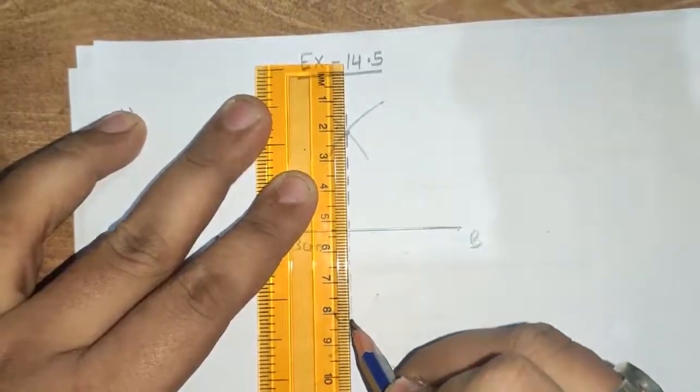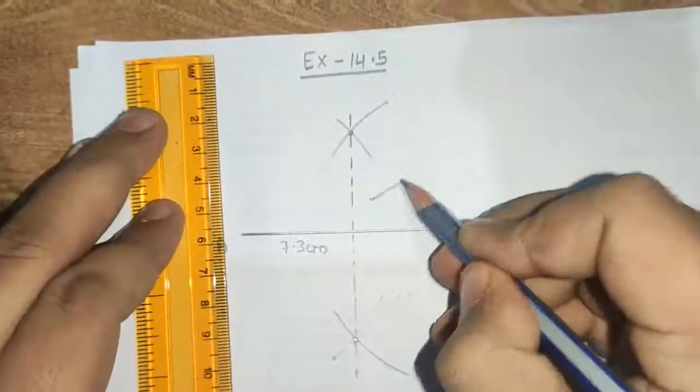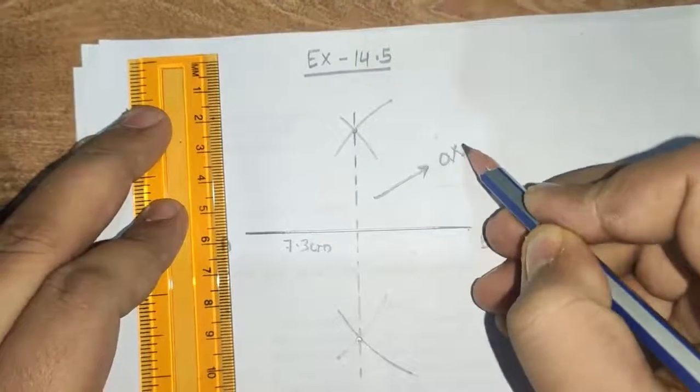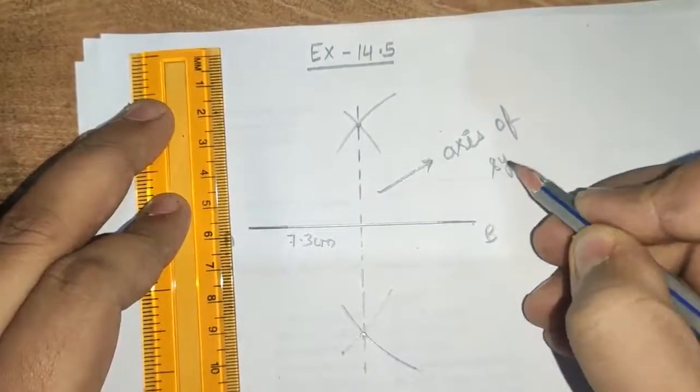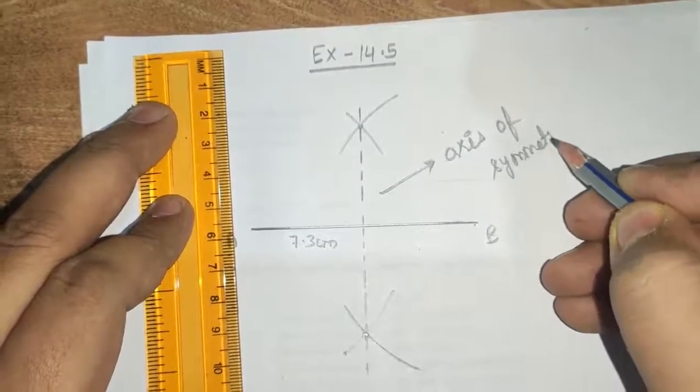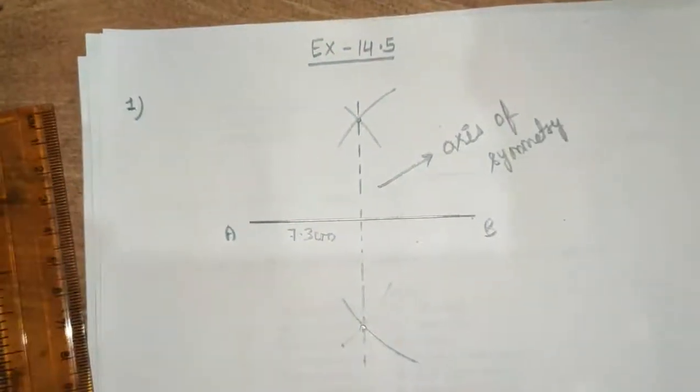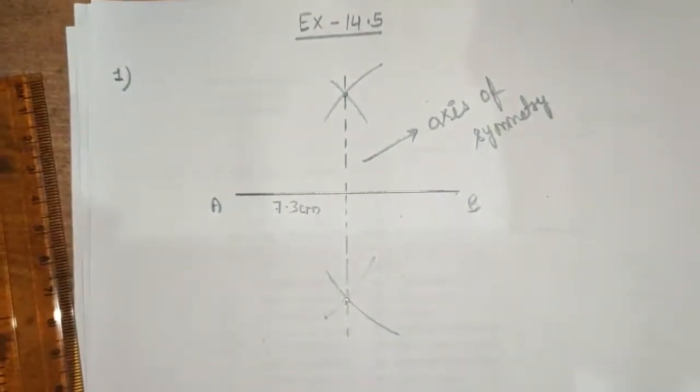This dotted line is the axis of symmetry. Because this is the perpendicular bisector of the line. So this is also the axis of symmetry for the line.